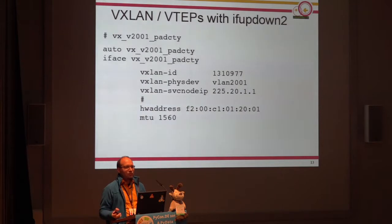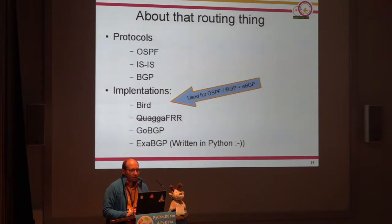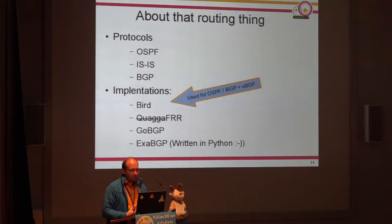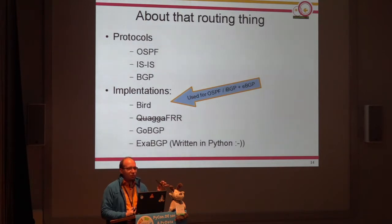Now we have interfaces. What about routing? We have a lot of boxes — every vertex in that graph with blue lines is a router, and every router has to know how to get to all other routers and networks, so we need routing protocols. The usual suspects are OSPF, IS-IS, or BGP, or a combination. There are a lot of open source implementations: BIRD — BIRD Internet Routing Daemon — there was Quagga which was forked to FRR — Free Range Routing — used by Cumulus as well, and GoBGP and ExaBGP, which is written in Python. We are using BIRD, and we use OSPF plus BGP on internal and external links. Works quite well.